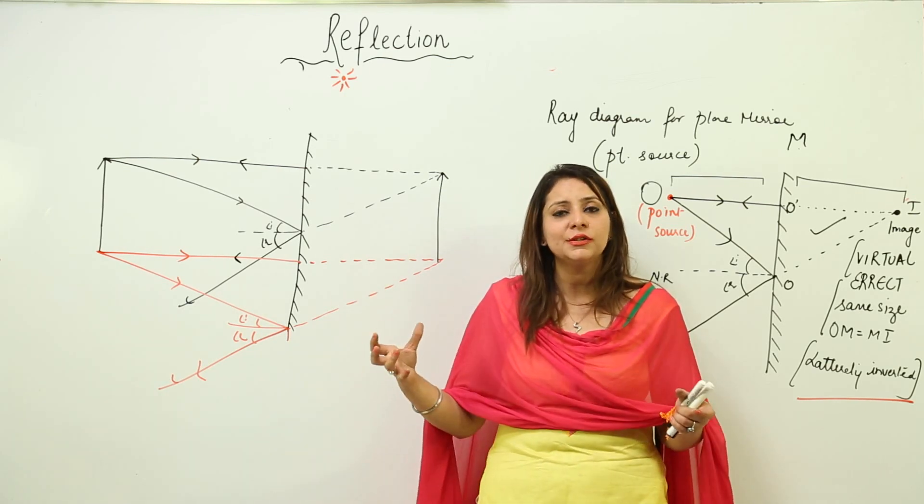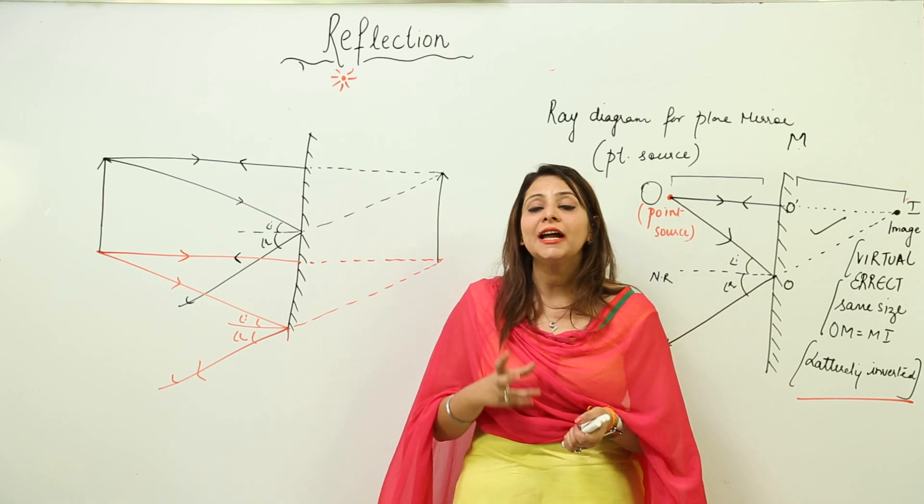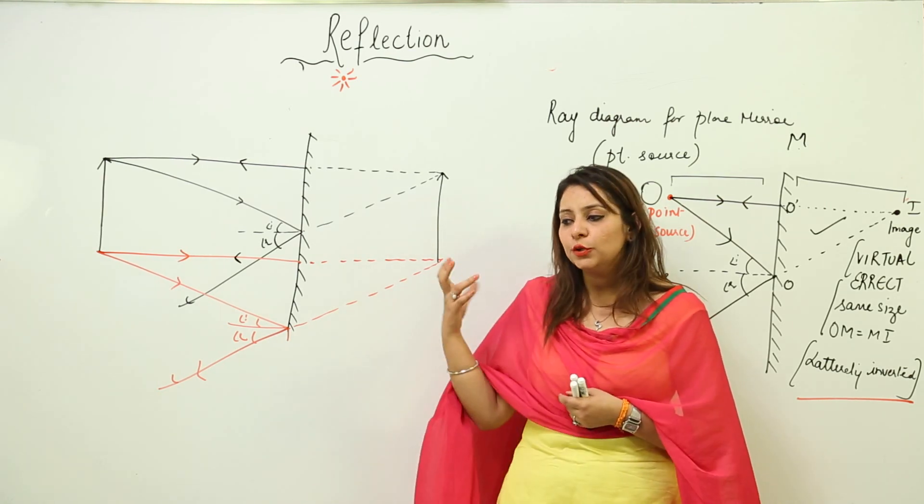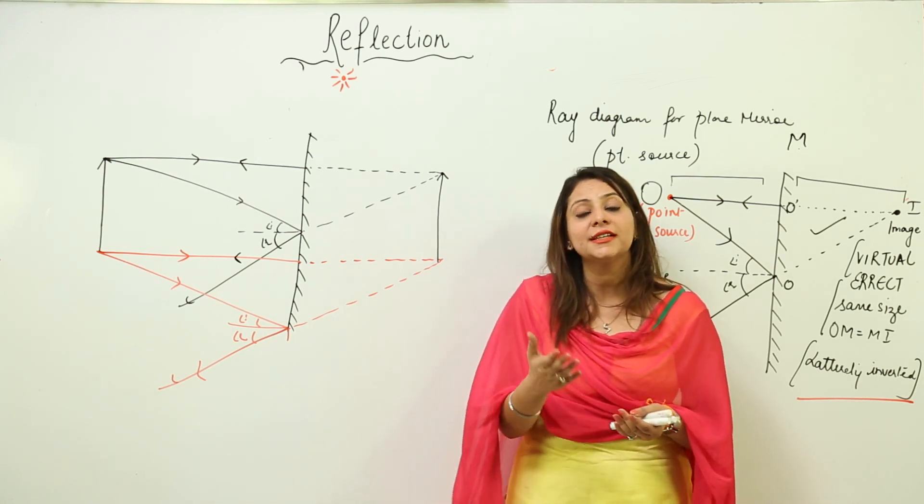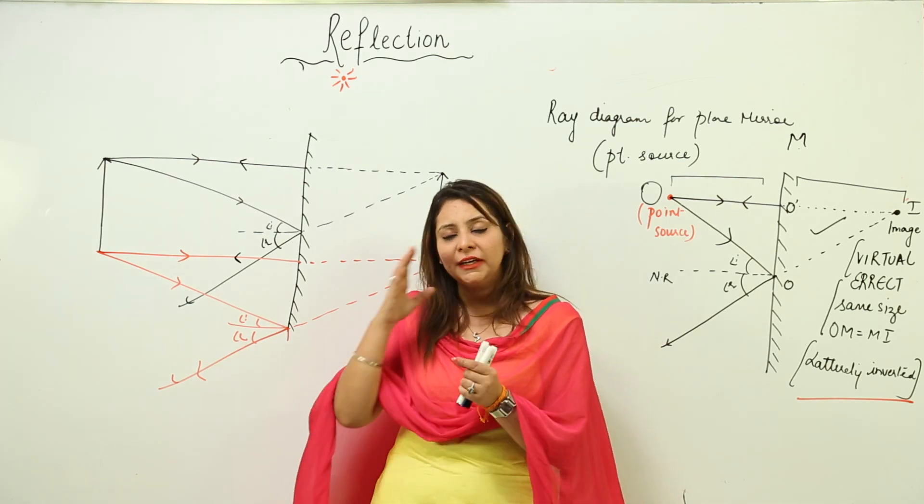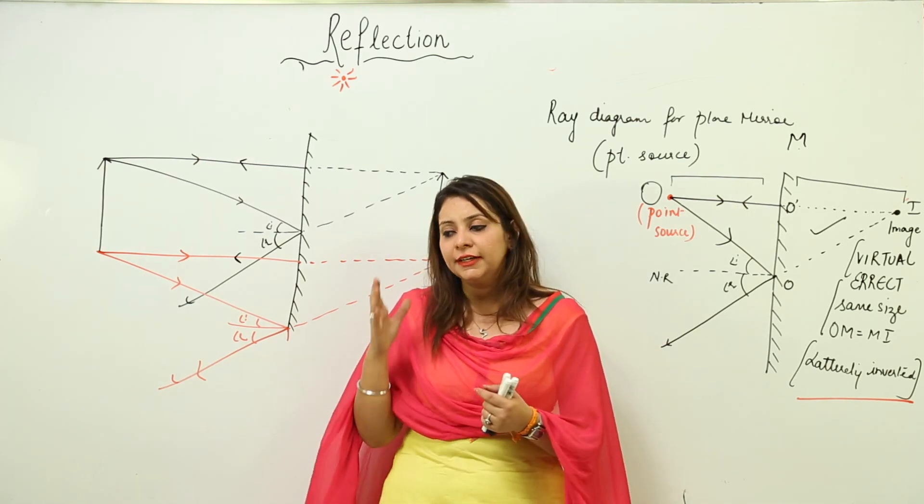Plane mirrors serve an important use because they're used in many things. They're also used in the optician room when you're getting your eyes checked or your number checked for spectacles. There, you use the mirror to read the alphabets.